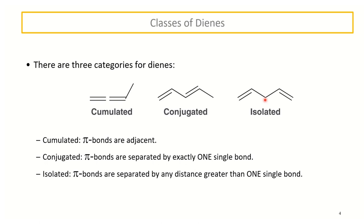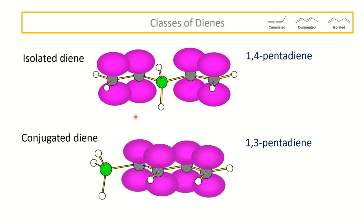In the isolated system, an sp3-hybridized carbon separates the p-orbitals that are perpendicular to the plane of the molecule. All p-orbitals are used up in the hybridization, so the two double bonds will not be conjugated — never the twain shall meet. In the conjugated system, all p-orbitals adjacent to each other are perpendicular to the plane of the molecule, giving conjugation. We'll be looking at 1,3,5 systems in the near future.